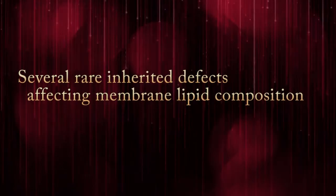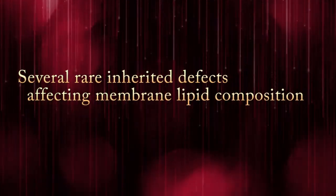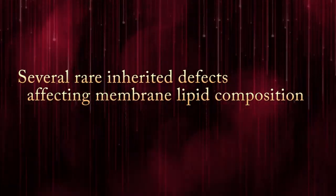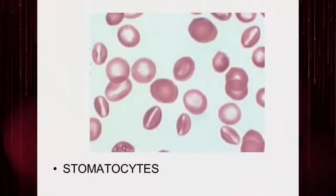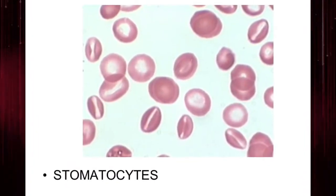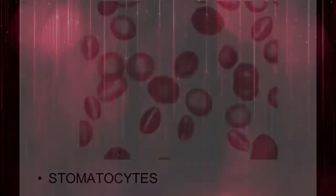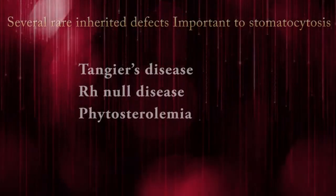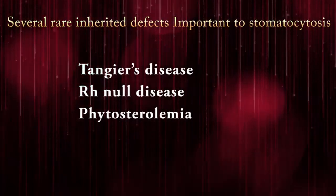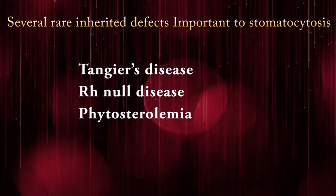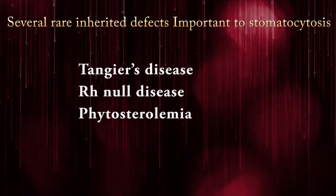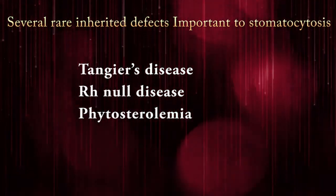Several rare inherited defects affecting membrane lipid composition have been reported to have stomatocytosis on the peripheral blood smear, such as Tangier's disease, Rh null disease, and phytosterolemia.